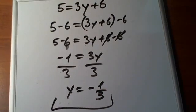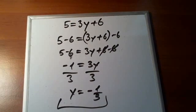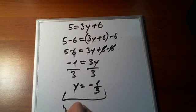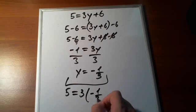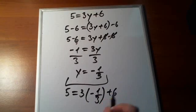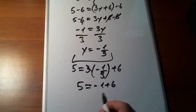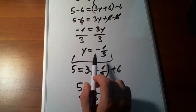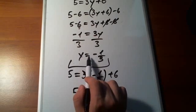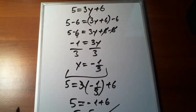Plugging negative 1 third into the original equation: 5 has to equal 3 times negative 1 third plus 6. The 3s cancel, leaving minus 1 plus 6, and minus 1 plus 6 is 5. So 5 is equal to 5 — correct! y is equal to negative 1 third is the solution to this linear equation. Thank you for watching.